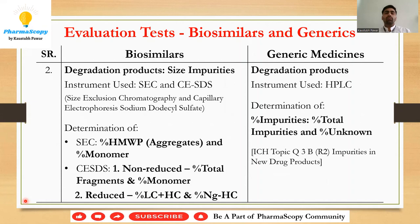The next important evaluation test is degradation products. In biosimilars, there are two major degradation pathways: size and charge. For size impurities, we use two instruments — SEC (size exclusion chromatography) and CE-SDS (capillary electrophoresis sodium dodecyl sulfate). CE-SDS is an advanced, more sophisticated version of gel electrophoresis.